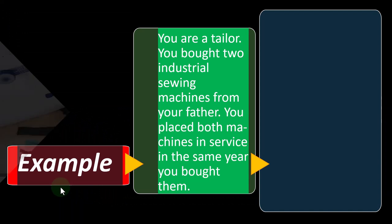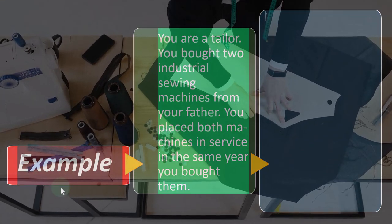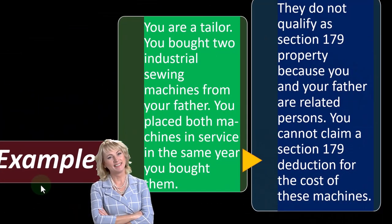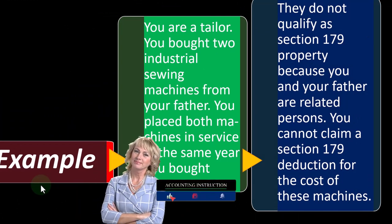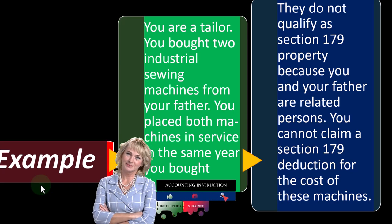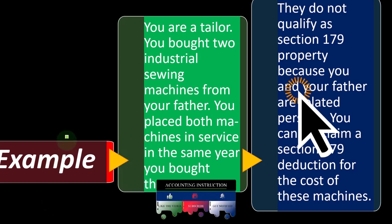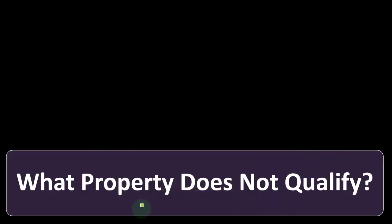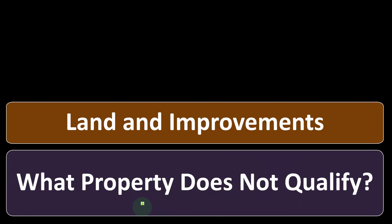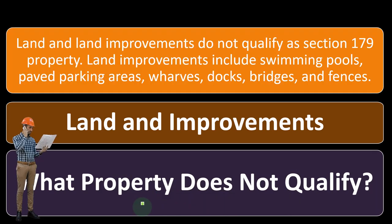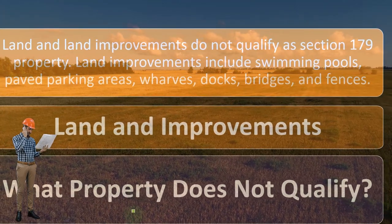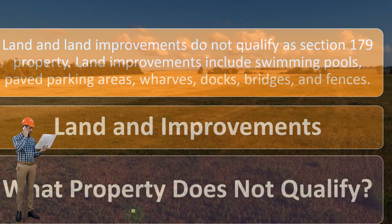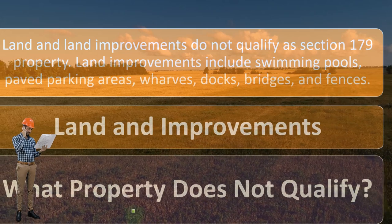What property does not qualify? Land and improvements do not qualify as Section 179 property. Land improvements include swimming pools, paved parking areas, wharves, docks, bridges, and fences.